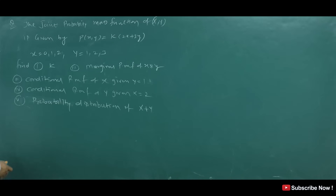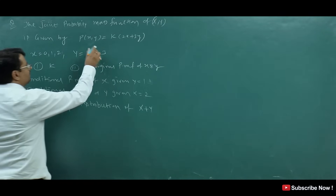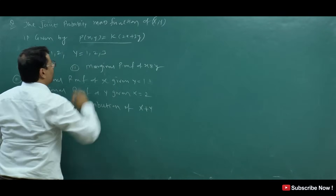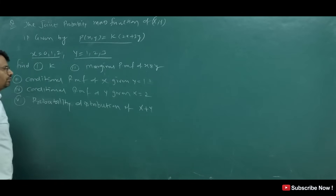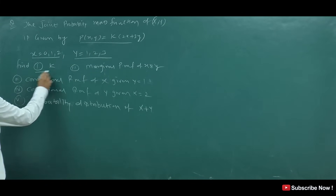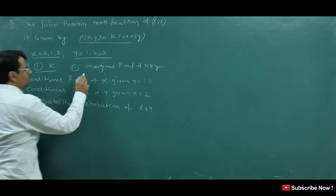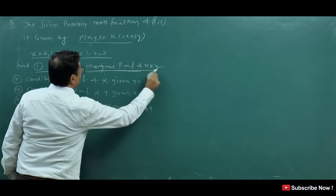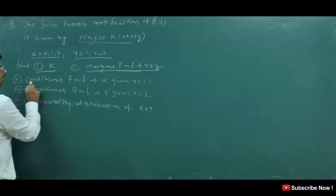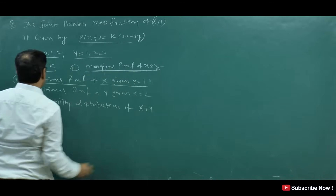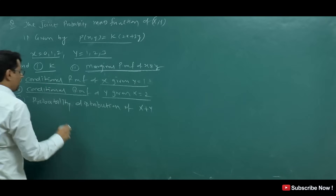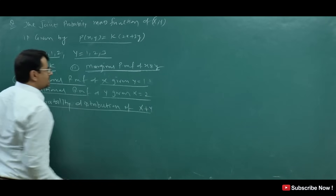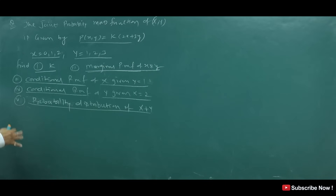So the question is: the joint probability mass function of X, Y is given. X takes values 0, 1, 2 and Y takes values 1, 2, 3. We need to find: K, marginal PMF of X, marginal PMF of Y, conditional PMF of X given Y equals 1, conditional PMF of Y given X equals 2, and the probability distribution of X plus Y.